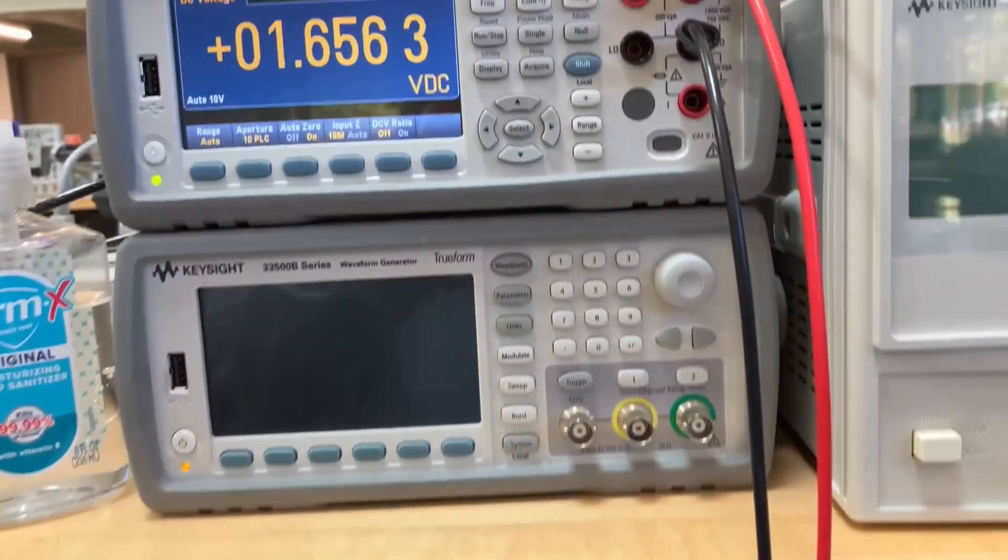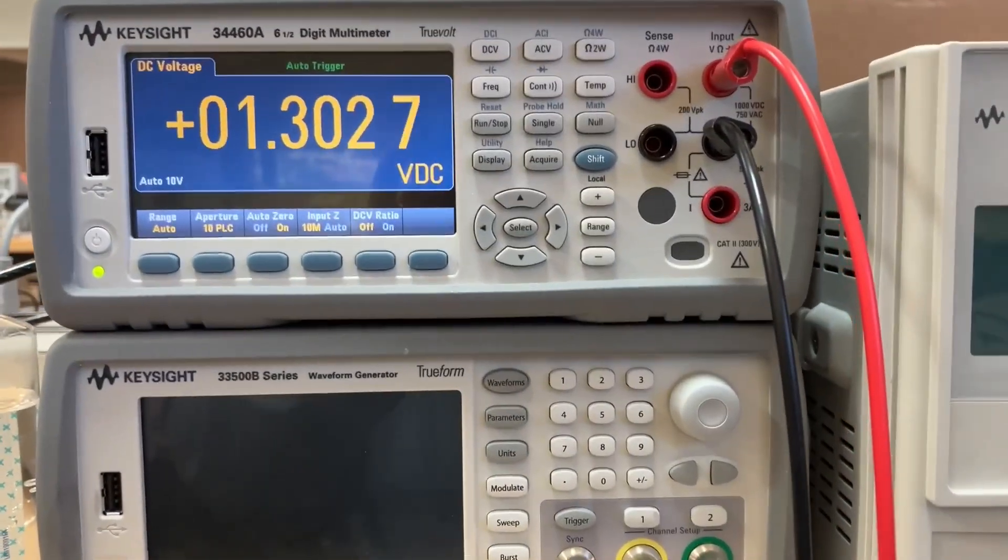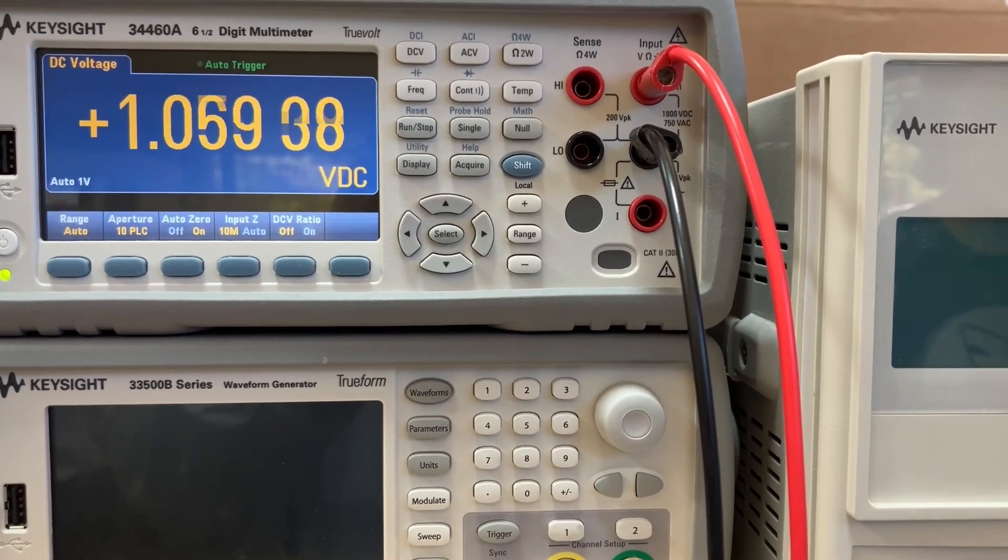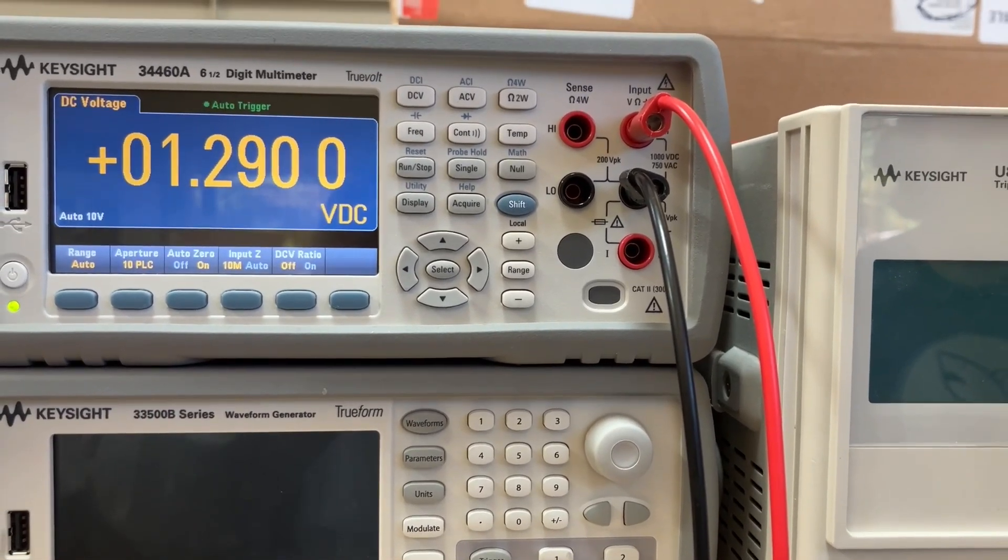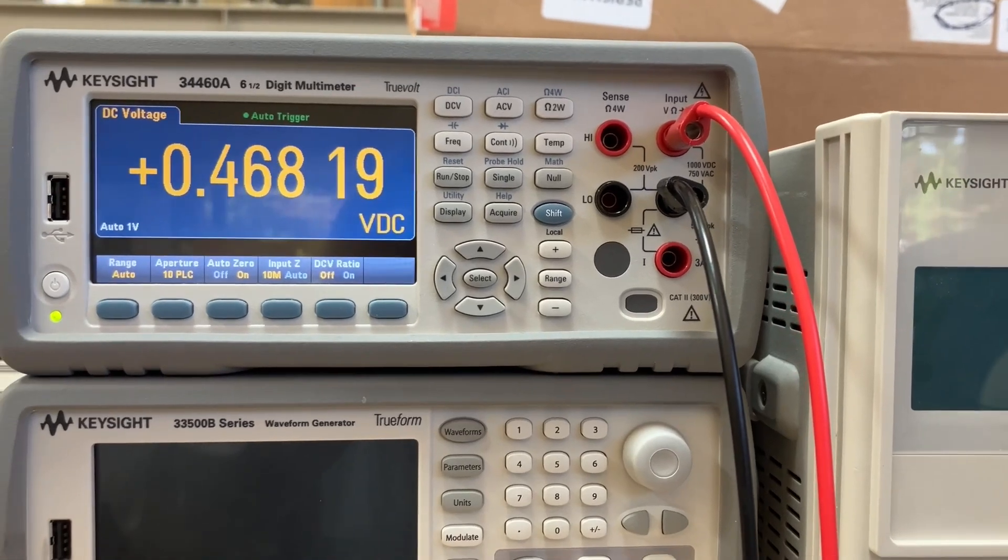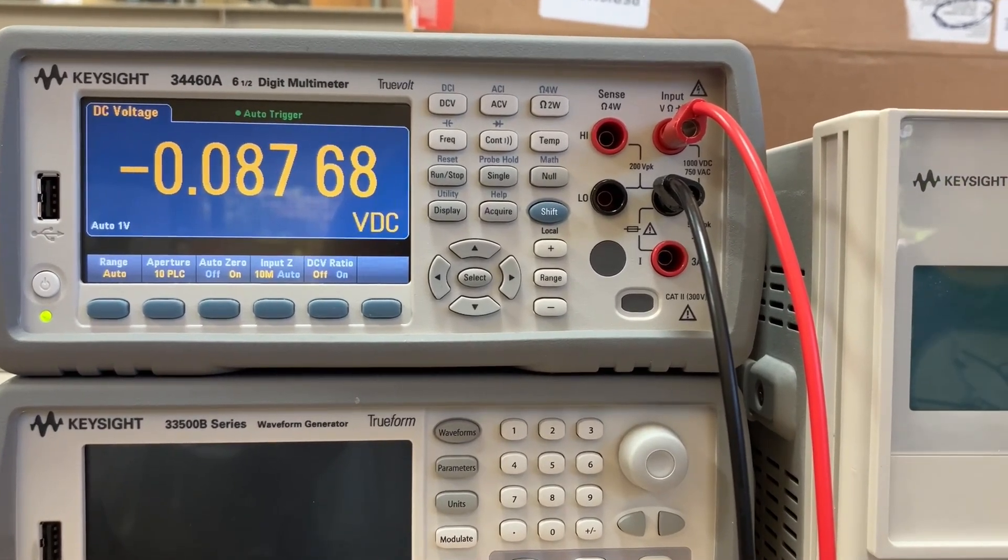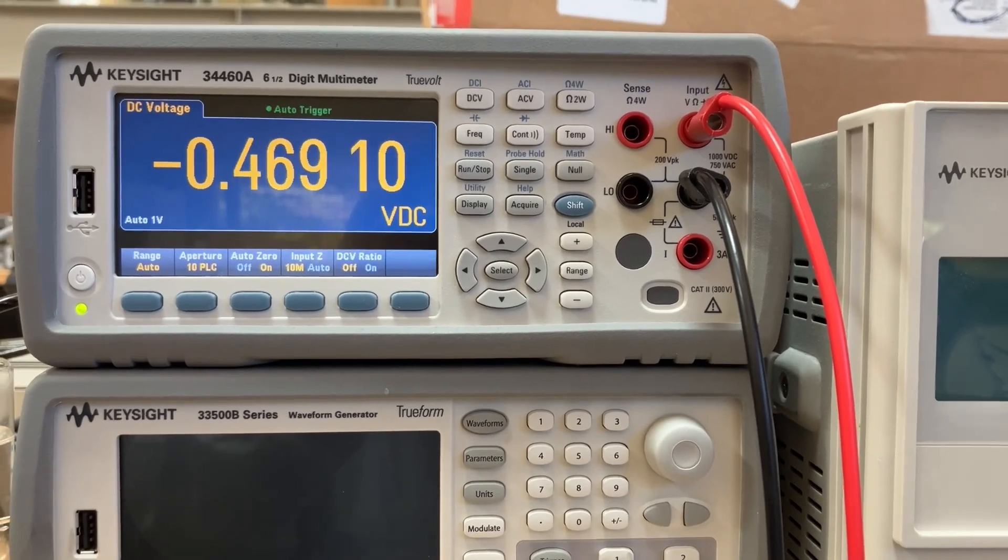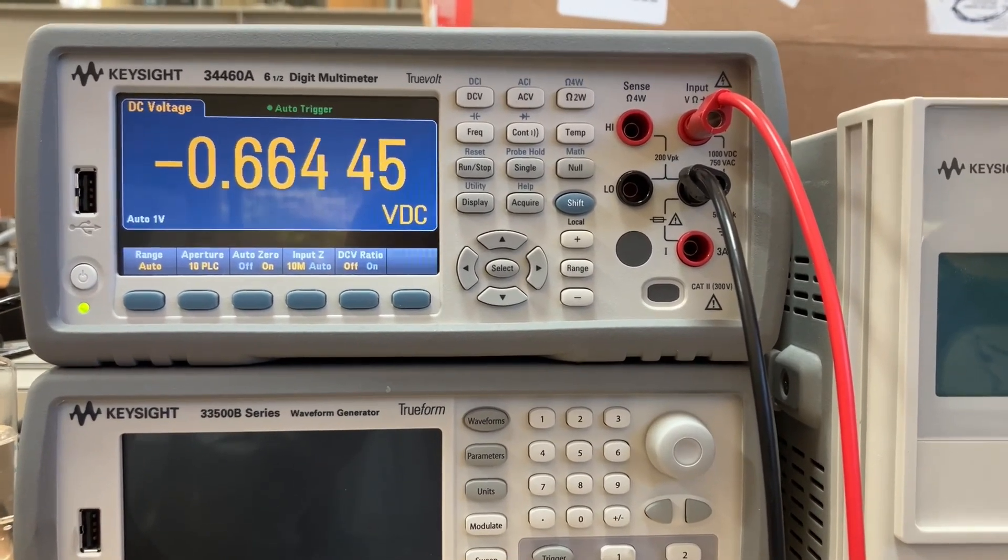When we look at the offset, it's all over the place. When I adjust the pot... let me try to adjust the pot here. Okay, so I'm lowering it... yeah, but now it's shooting down in the negative direction. So let me try increasing it.